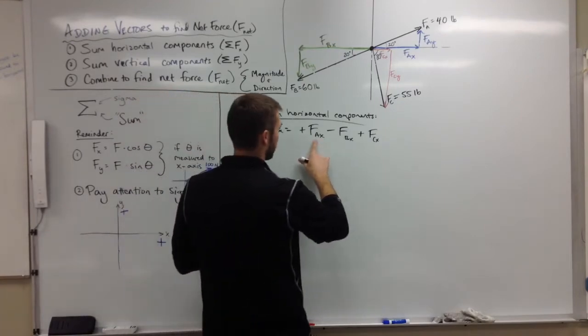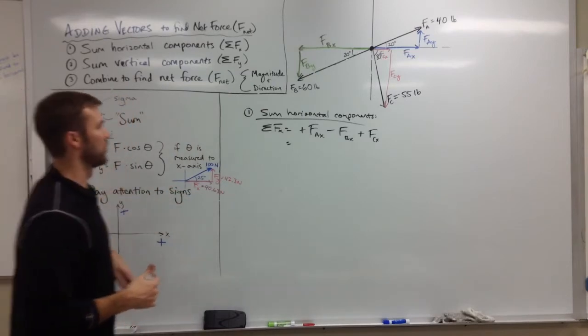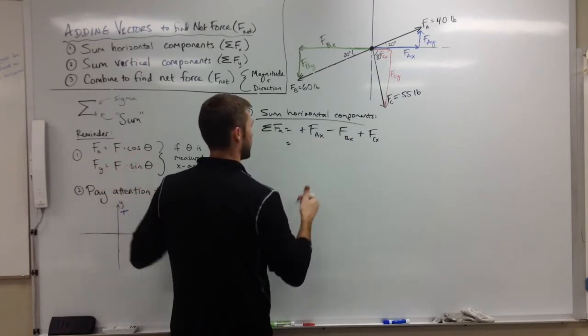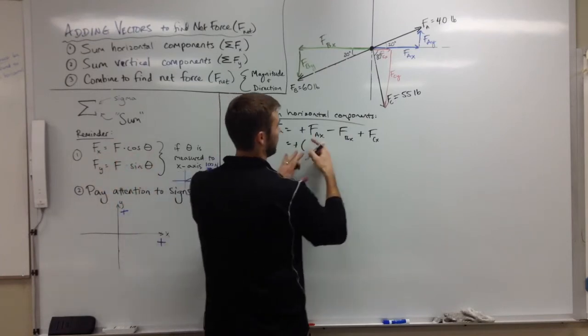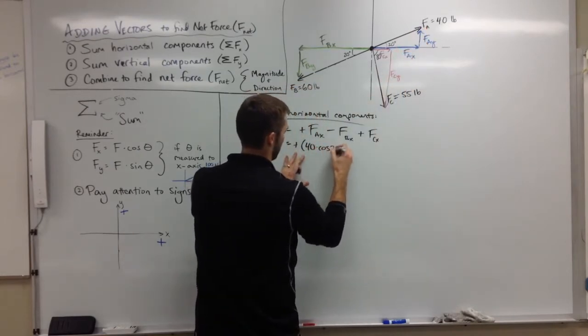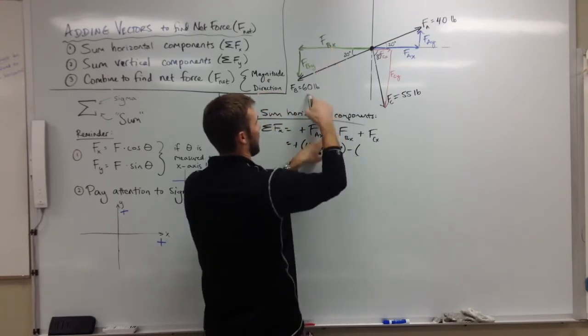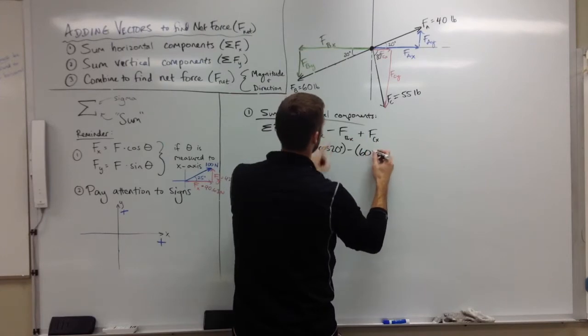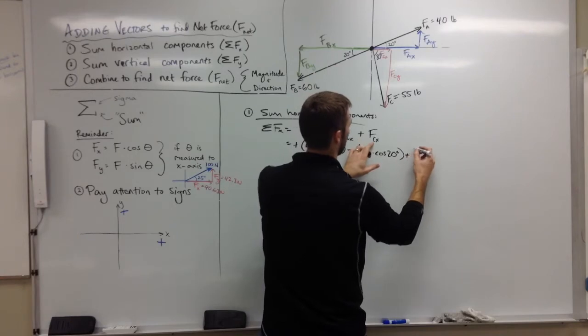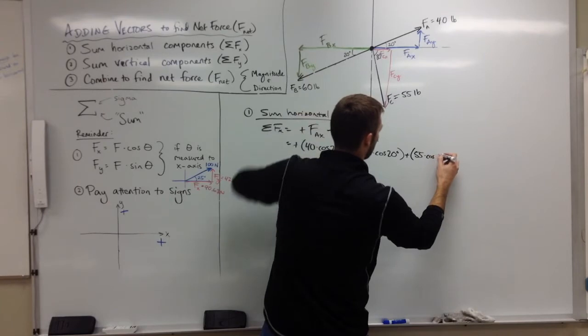Alright, FA's x component. We've got the signs figured out, so now it's a matter of using our shortcuts over here to find those components. Let's do this quickly here. FA's x component is going to be the magnitude of FA times the cosine of theta, so positive FA's x component is FA cosine 20, so 40 cosine 20, minus FB's x component is going to be FB times the cosine of its angle, so 60 pounds times the cosine of 20, plus FC's x component is going to be FC times the cosine of its angle.